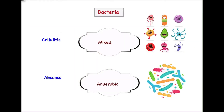The next point — an extension of the tissue fluid discussion — is based on laboratory investigation of the cultured aspirate. In cellulitis, the bacteria obtained are mixed, meaning both aerobic and anaerobic bacteria are present, making it a mixed type of odontogenic infection. In abscess, the majority of microbes involved are anaerobic. This is another differentiating point based on laboratory investigations.